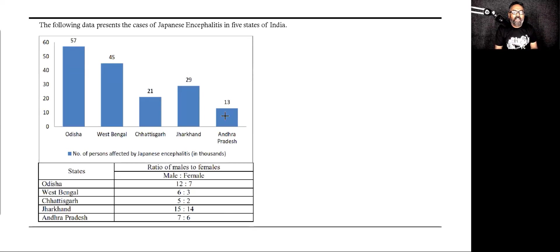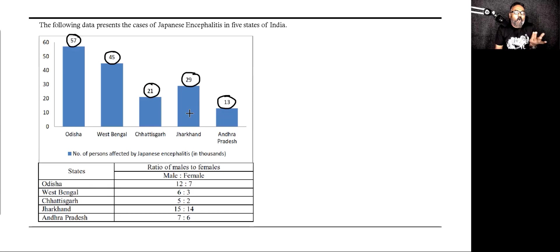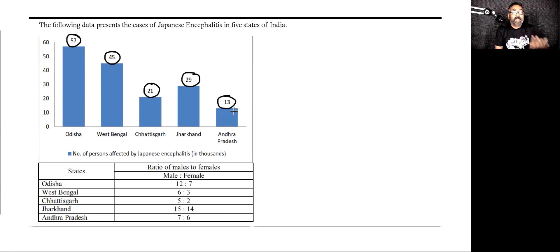So when you look at this chart, there is nothing to be worried about. This is merely giving a particular number. So this chart looks scary, but the information provided by this chart is just one number. Why did they give it in a bar graph? It could be a table. So just to scare us — all that information gives is one particular figure for one particular entity: Odisha 57, West Bengal 45, Chhattisgarh 21, Jharkhand 29, and Andhra Pradesh 13. And then we have some additional information here.